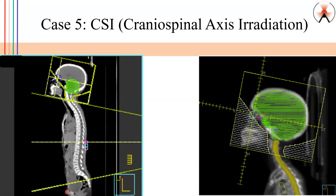The same thing applies with the other fields that have to match. Here's another match — it's easier when it's a straight line like this. The spinal cord extends all the way down here, so we have to treat the entire range of the spinal cord. The spinal cord here and the brain — that encompasses the central nervous system. Notice we have to be careful about the eye and compensate for that by shielding it.